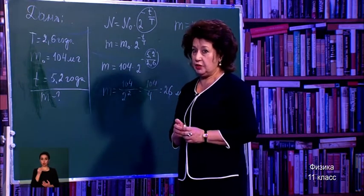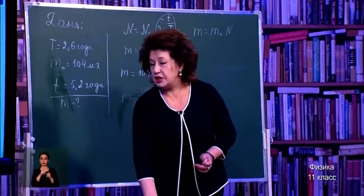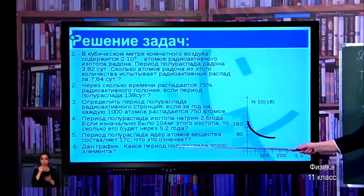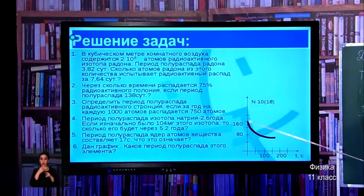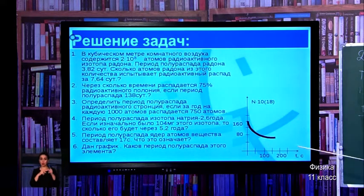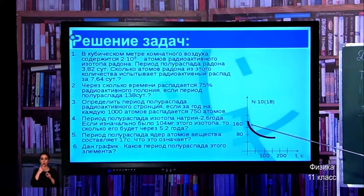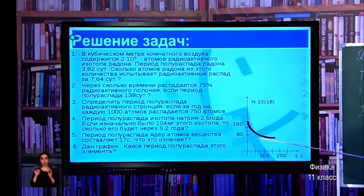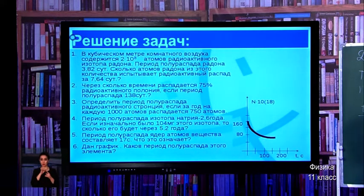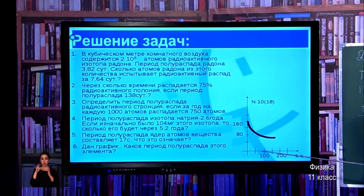For Problem 6, a graph is given — what is the half-life of this element? The vertical axis shows the number of nuclei and the horizontal axis shows time. The initial number of nuclei is 160. When it drops to half — 80 — that occurs at 50 seconds. So the half-life can be read directly from the graph as 50 seconds. You can calculate this yourselves.